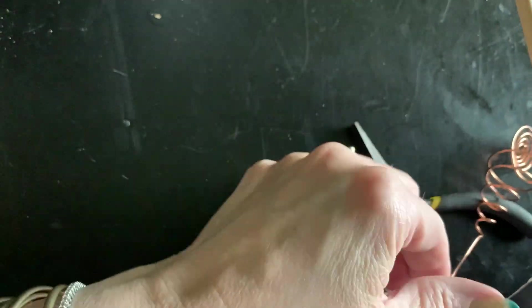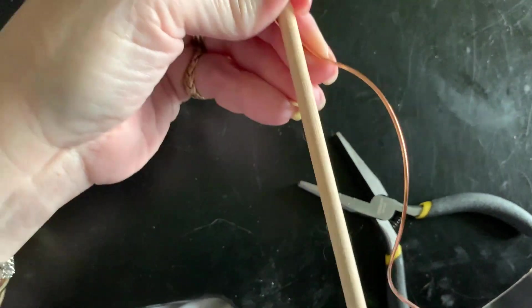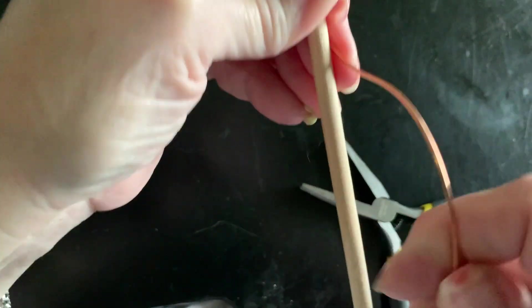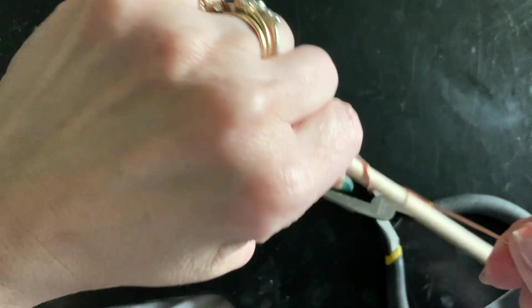After coiling the two different sections, I am now wrapping the bottom of it around a dowel. This is a quarter inch dowel - you can use whatever size you happen to have.